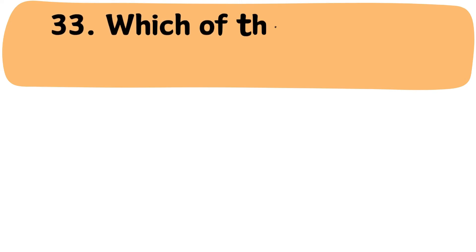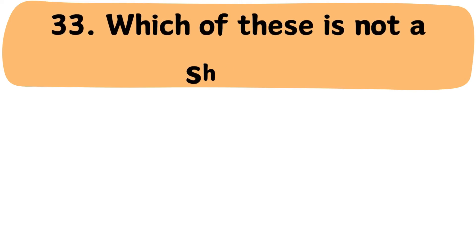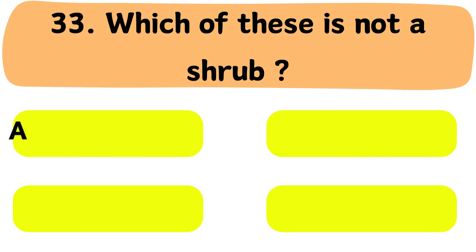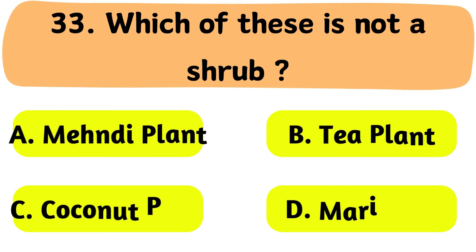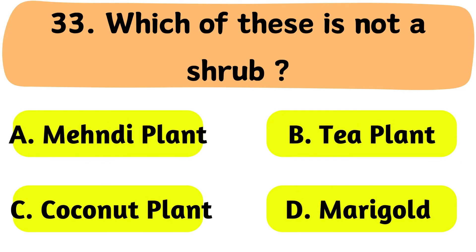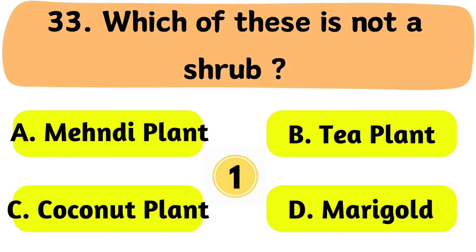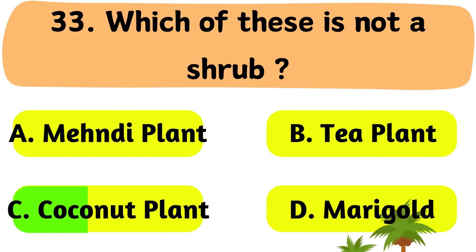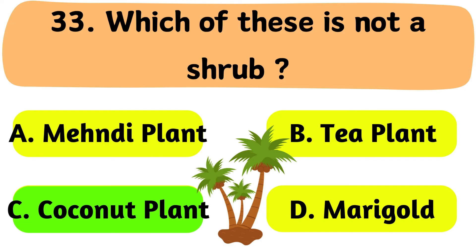Question No. 33: Which of these is not a shrub? A. Mehendi plant. B. Tea plant. C. Coconut plant. D. Marigold. The correct answer is Option C: Coconut plant.